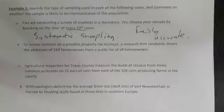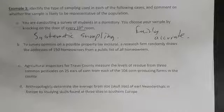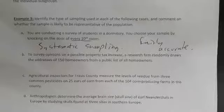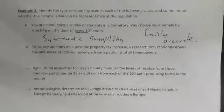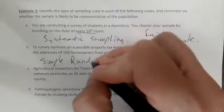To survey opinions on a property tax increase, a research firm randomly draws the addresses of 150 homeowners from a public list. This has simple random sampling. Are we stratifying anything? It doesn't look like anything is being subdivided — they're just randomly sampling homeowners with no stratification. So this is simple random sampling.